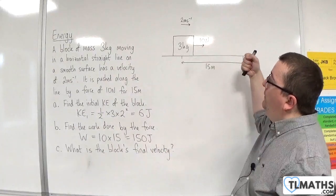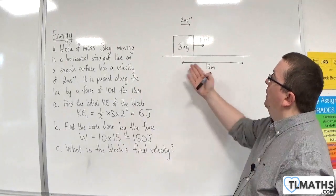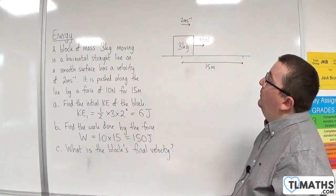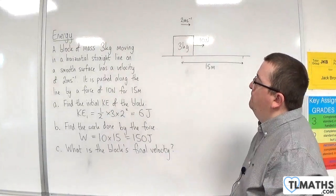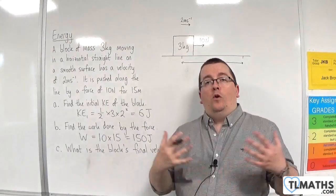We've got a 10 Newton force pulling this 3 kilo block along a smooth surface of 15 metres with an initial velocity of 2 metres per second. And now we have the work energy principle.